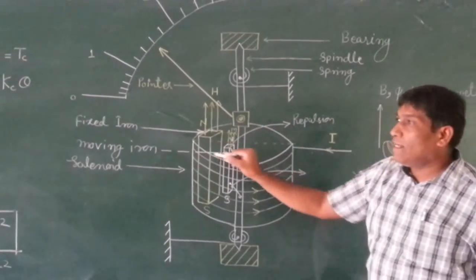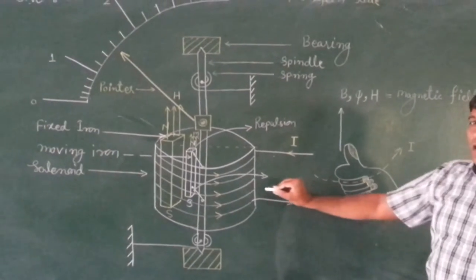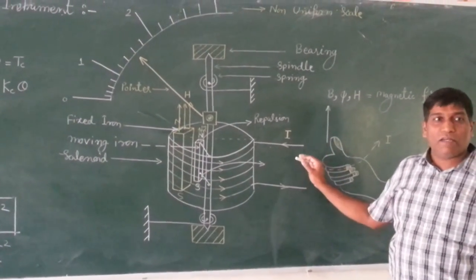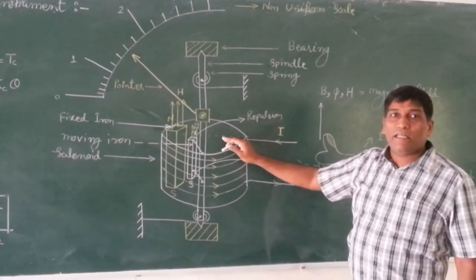Now, to create the magnetism, we are having a solenoid. In the solenoid, whenever current is flowing depending on the voltage, the magnetism is generated.